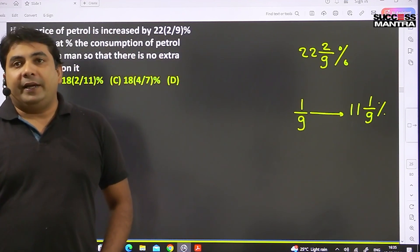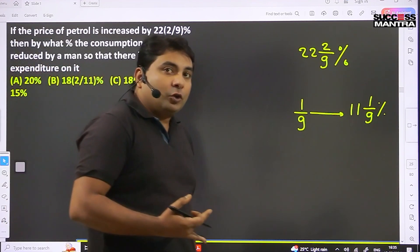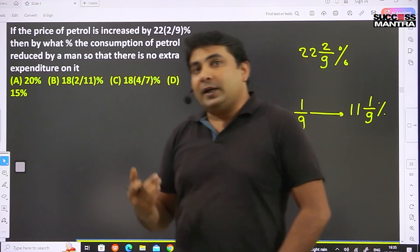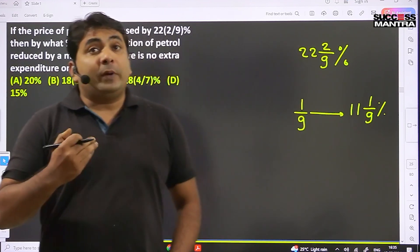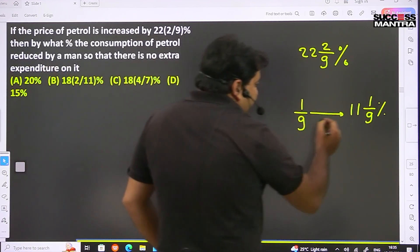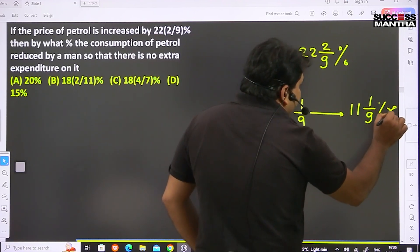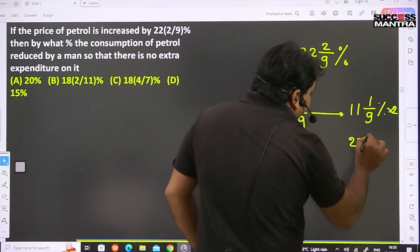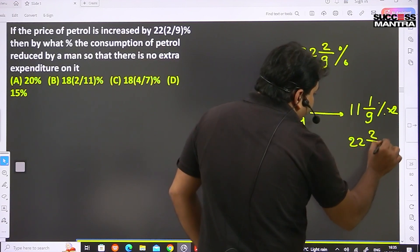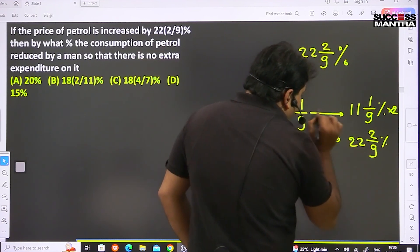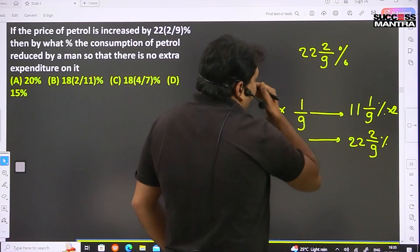1/9, if I change it to percentage, its value is 11 1/9 percent. So 22 2/9 percent means if I double this - multiply by 2 here and also multiply by 2 here - I get 22 2/9 percent. So your fraction value is 2/9.